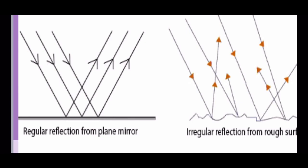Irregular reflection. In irregular reflection, reflected rays scatter in different directions. So the image cannot be seen.